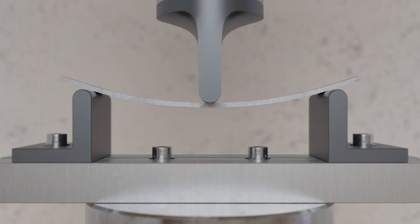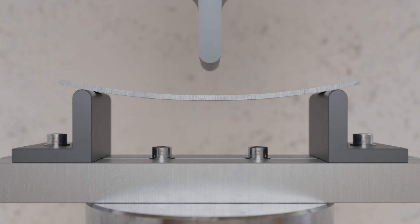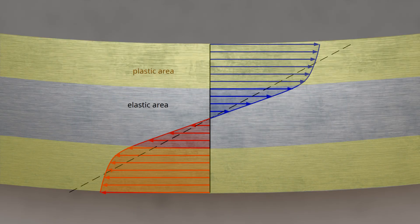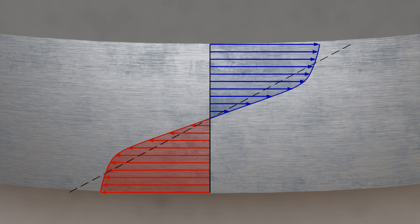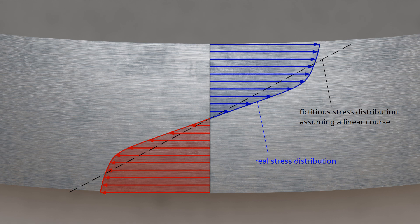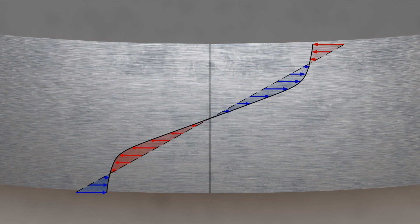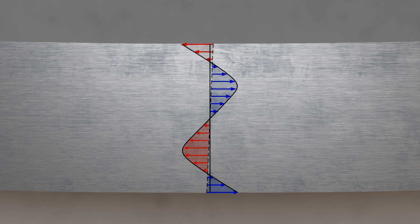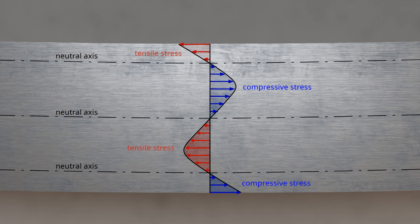If a partially plastically deformed specimen is unloaded in the flexural test, only internal stresses act at this moment, resulting in a corresponding springback of the sample. The internal stresses try to return the elastically deformed areas to their original state, while the plastically deformed areas try to prevent this. Even without external forces, stresses remain in the material — referred to as residual stresses. Since the fictitious stress distribution is based on the validity of Hooke's Law and its elastic deformation behavior, the residual stresses can be determined from the difference between the true stress and the fictitious stress. New neutral axes are formed which are neither subjected to tensile nor compressive load.